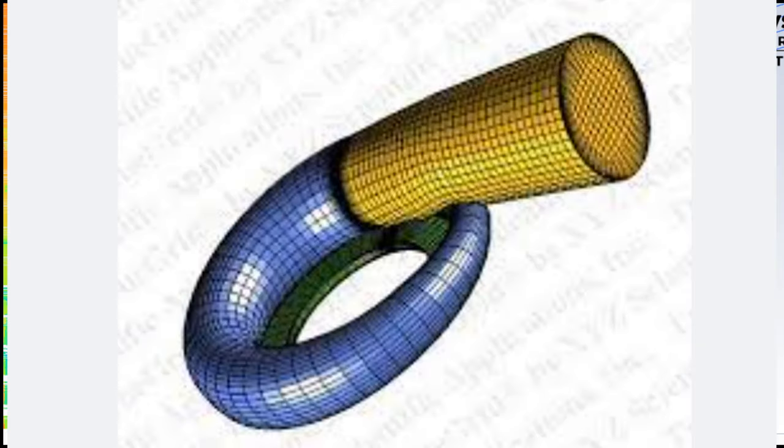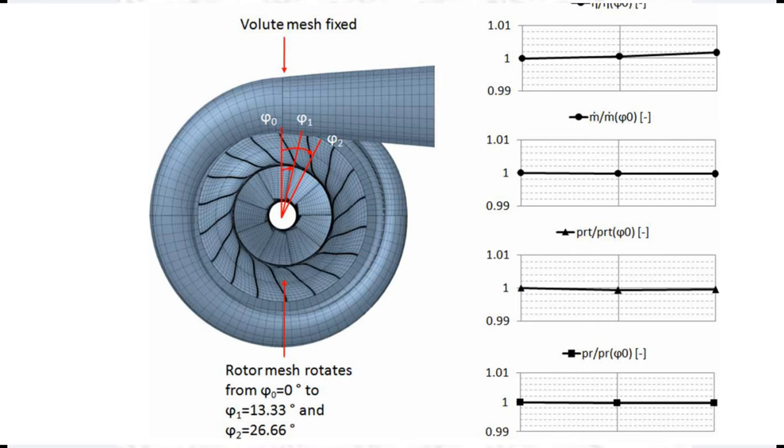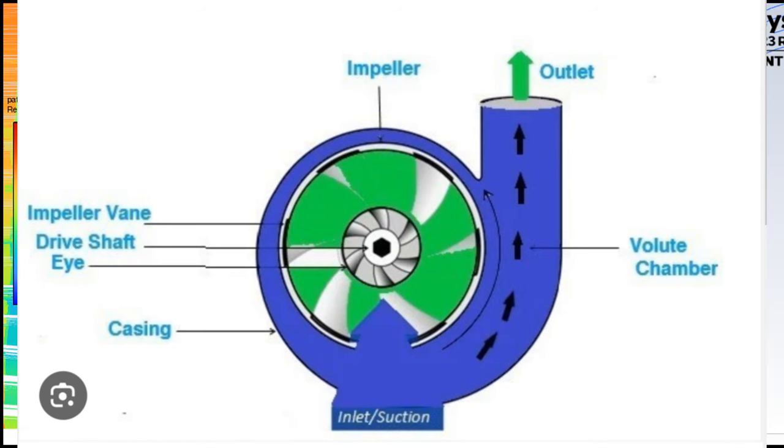Volute or scroll. A curved stationary casing surrounding the impeller and diffuser collects the high-pressure gas from the diffuser and directs it to the compressor outlet.